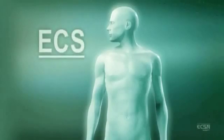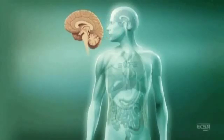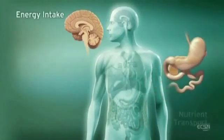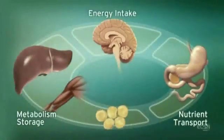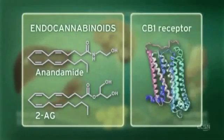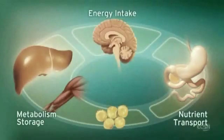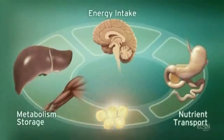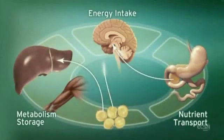The endocannabinoid system, or ECS, influences multiple physiologic processes. This intricate system modulates energy intake, as well as nutrient transport, metabolism and storage. The ECS regulates these processes through endogenous ligands, such as anandamide and 2-arachidonylglycerol, and the CB1 receptor. CB1 receptors are located in the brain, digestive tract, muscle and adipose tissue. Integration of these central and peripheral ECS components is achieved through neuronal and hormonal signaling.